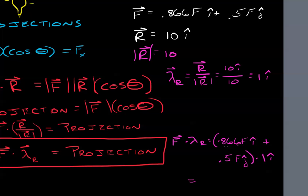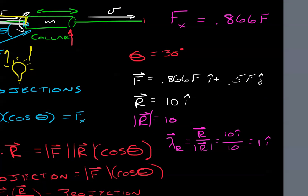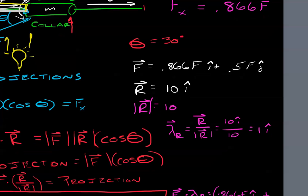Okay, great. Let's see what we come up with. Well, 0.866 F i dotted by 1i is simply going to be 0.866 F. And then we're going to add to that 0.5 F j dot i. But j dot i is 0. We find out that the projection is 0.866 F. That corresponds exactly with right up here. Force in the x direction, 0.866 F.